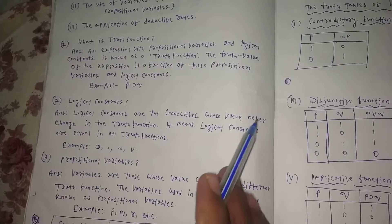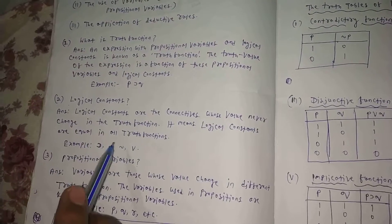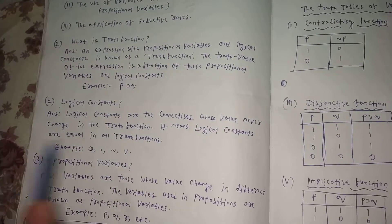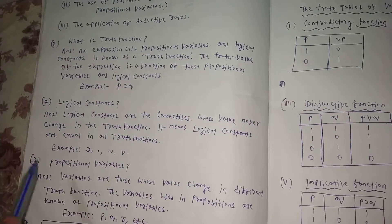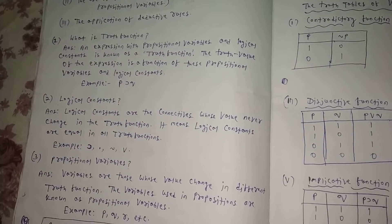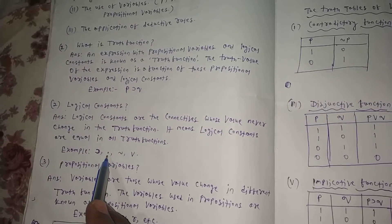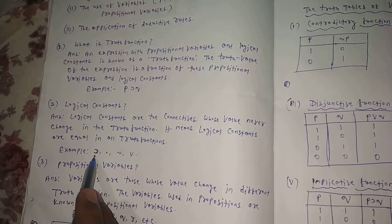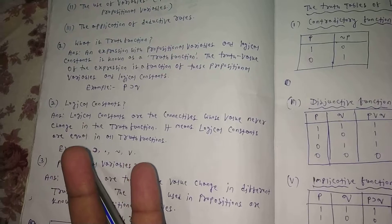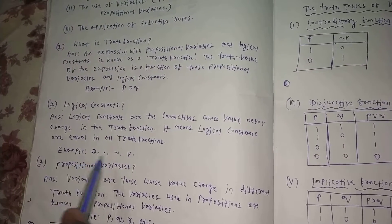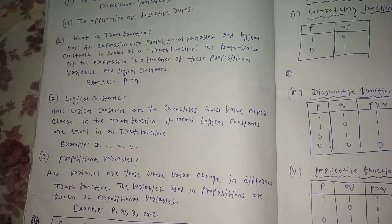Logical constants are the connectives whose value never changes in truth functions. It means logical constants are equal in all truth functions. This includes the mark of implication, the mark of conjunction, and the mark of disjunction, etc. The value of logical constants is fixed across all truth functions.